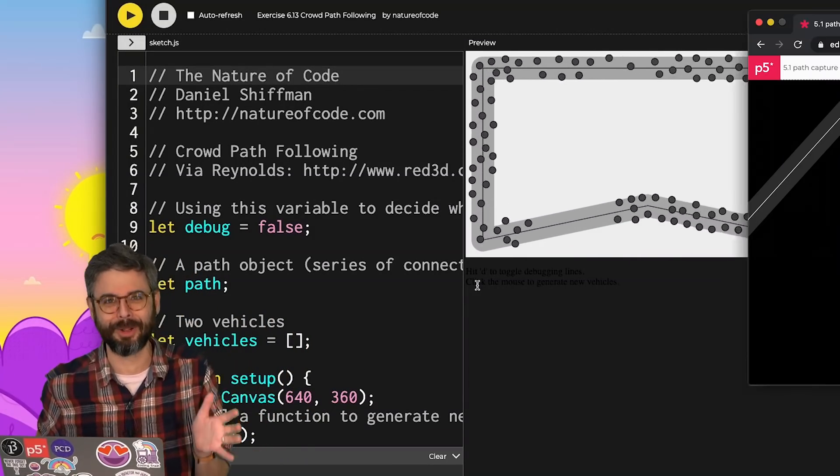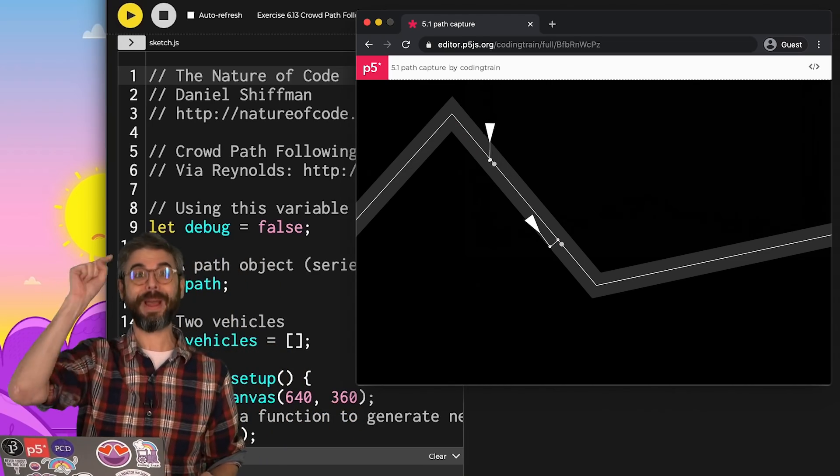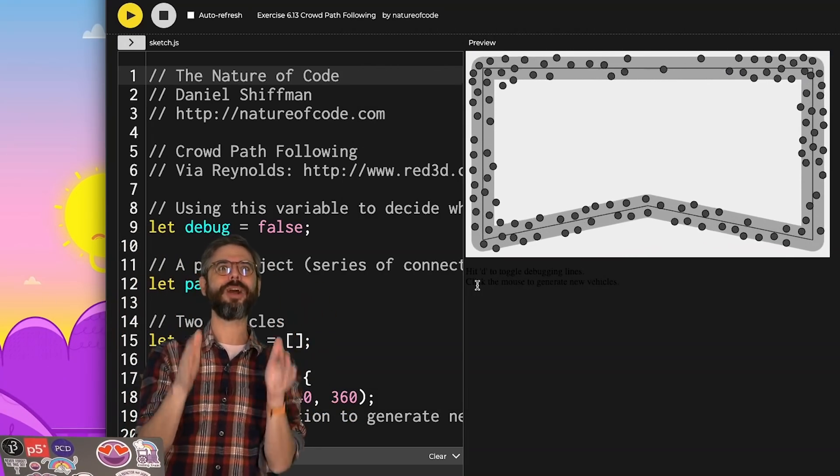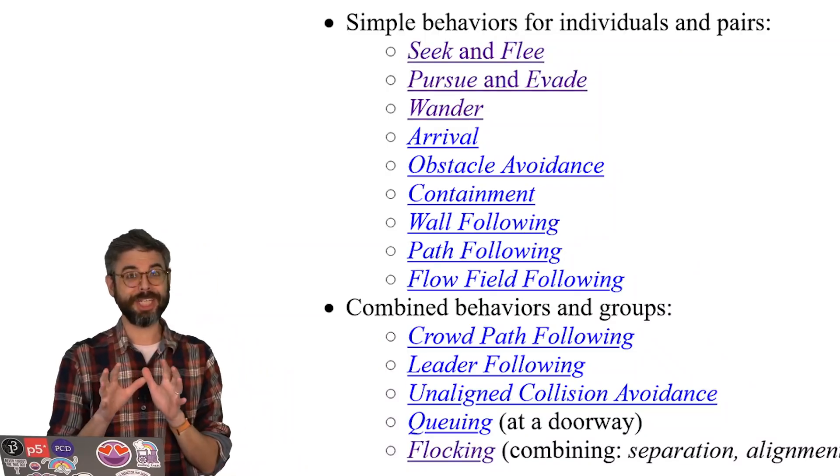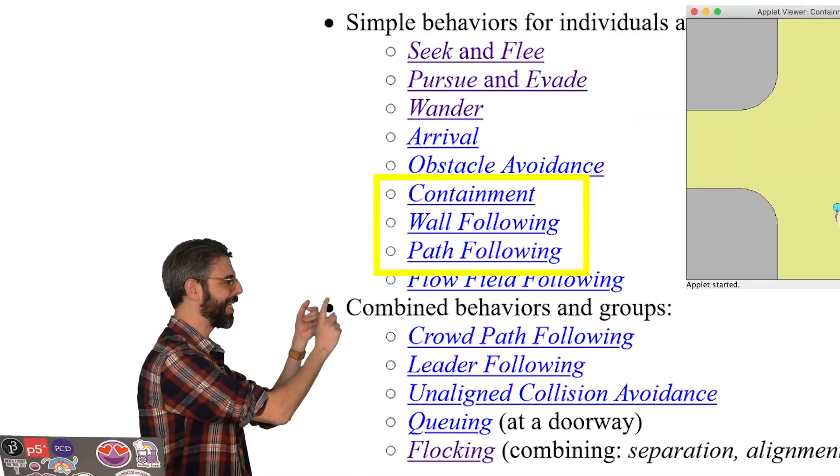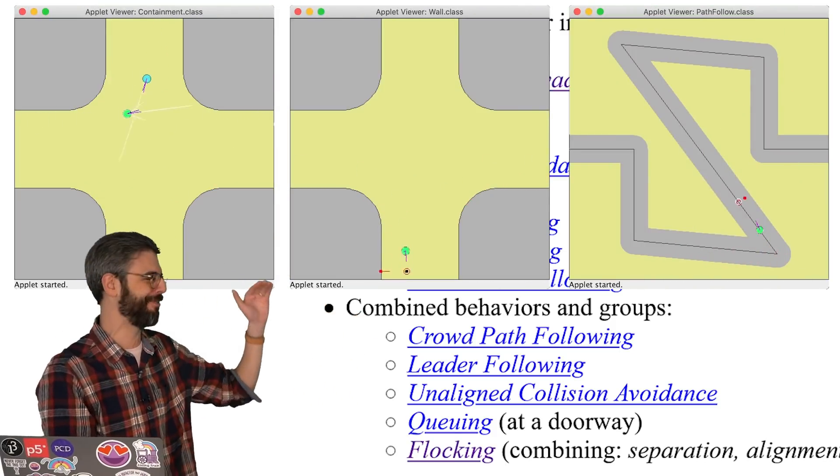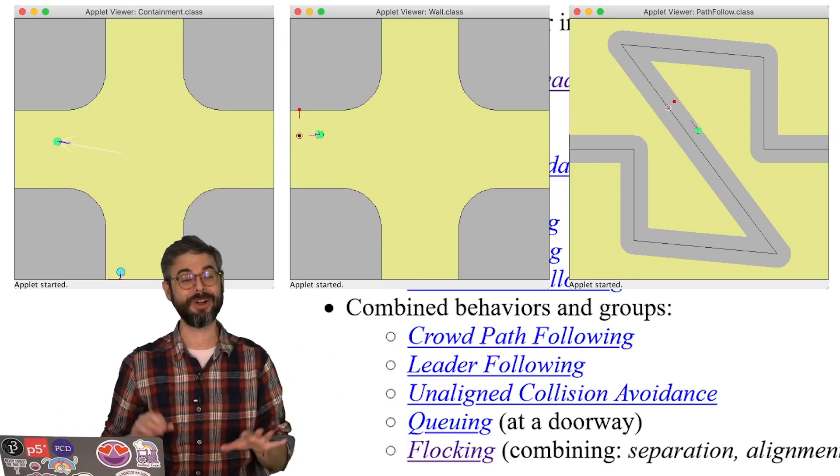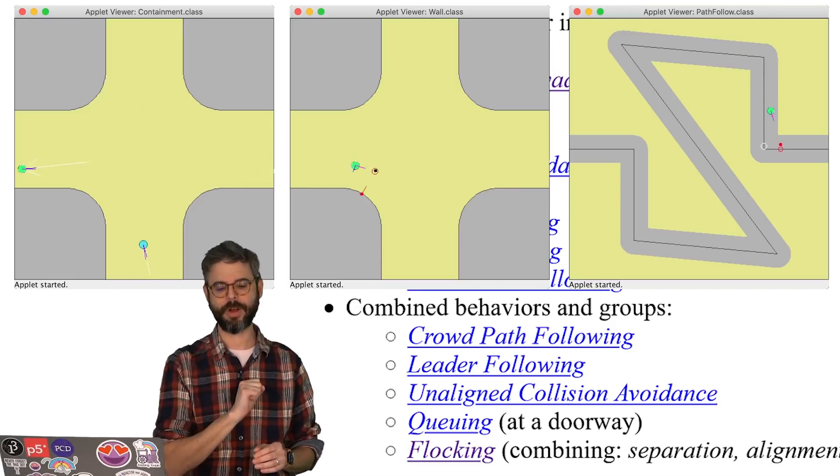In order to make this example, I first need to work out path following itself with one dot following the path. And to figure out path following, I need to understand scalar projection. Scalar projection is a foundational concept for three behaviors: containment, wall following, and path following. I'm going to focus on scalar projection and lead it into path following.